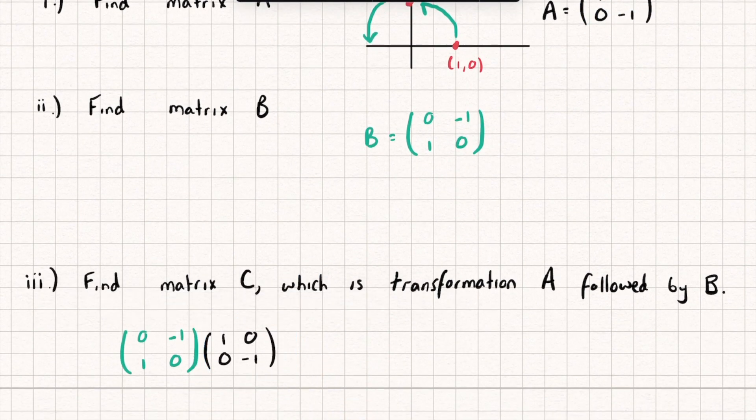So here I'll write out to make it really clear. We're doing B multiplied by A and we're going to get the resulting matrix of (0, 1, 1, 0).